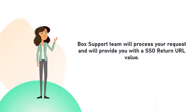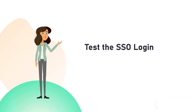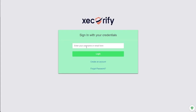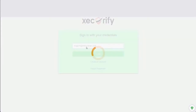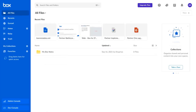The Box support team will process your request and provide you with an SSO return URL value. Now let's test the SSO login to your Box account with MiniOrange IDP. Go to your Box subdomain login page and click Continue to authenticate with MiniOrange. Enter your MiniOrange login credentials and click Login. You will be automatically logged into your Box account.